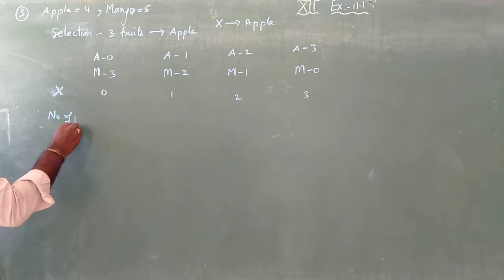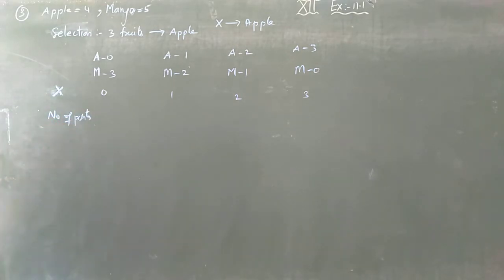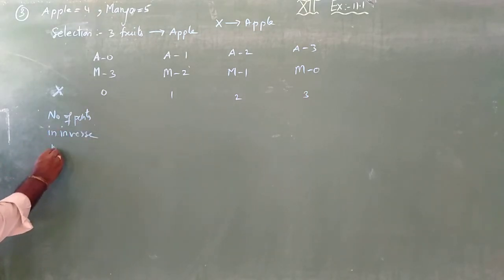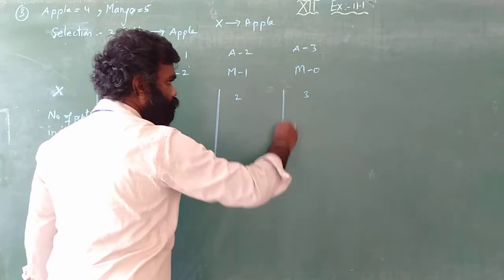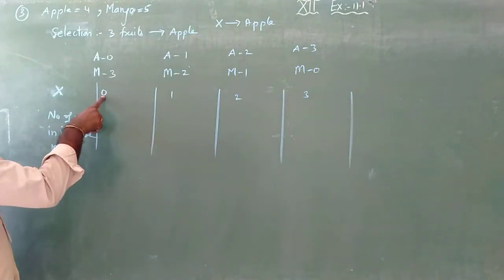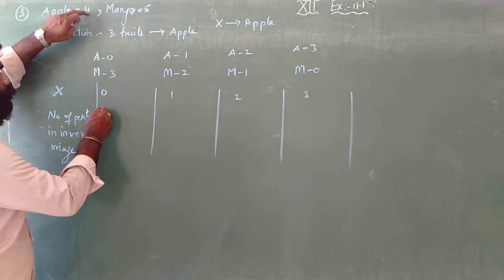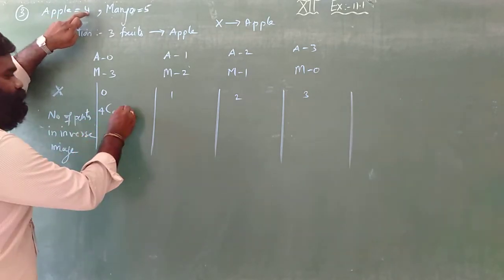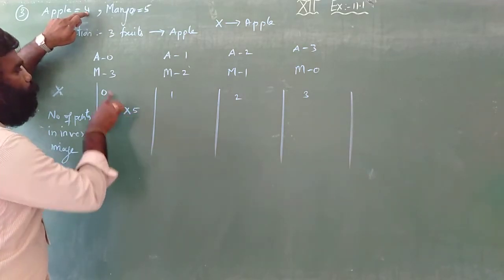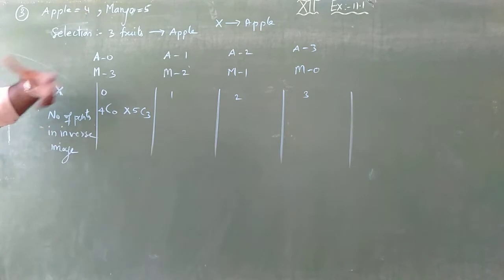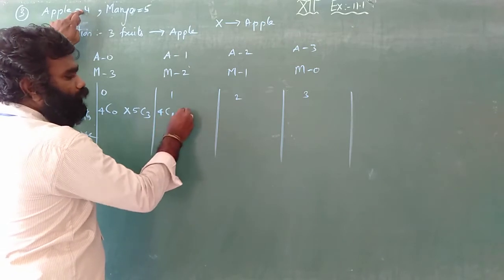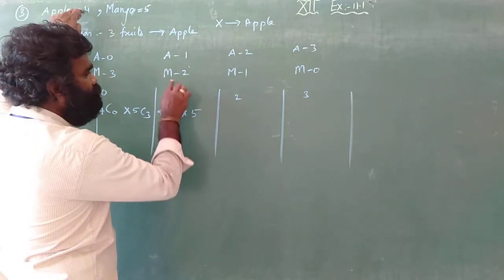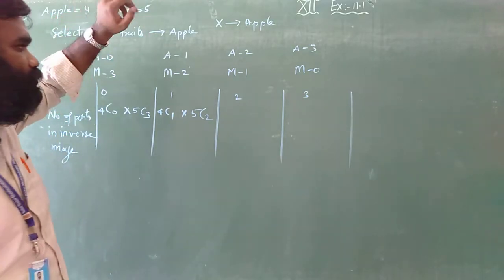Number of points in inverse image — so for 0 apples: total 4 apples, therefore 4C0. How many mangoes? 5, so 5C3. Next: total 4 apples, I am taking 1 apple. How many mangoes? 5 mangoes, I am taking 2 mangoes — so 4C1 times 5C2.